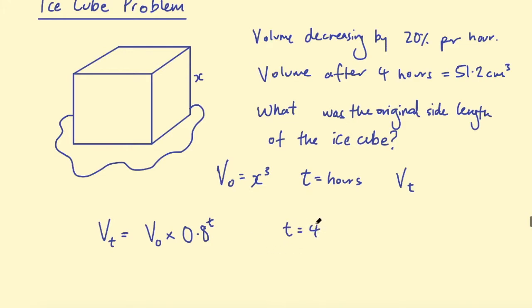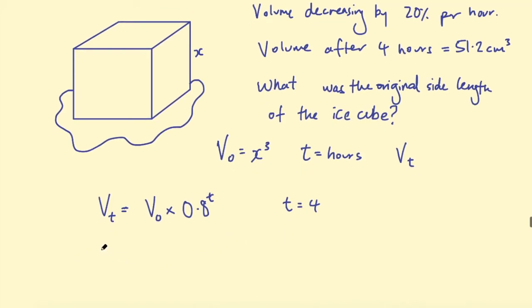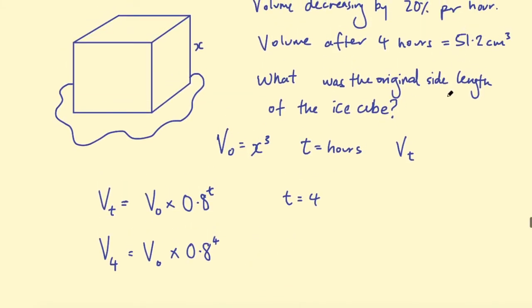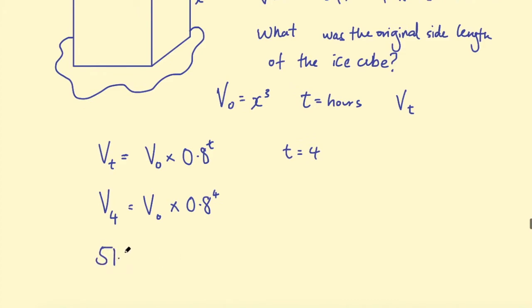So we're looking for the original volume and we're given the volume after four hours. So we can say the volume after 4 hours is the original volume multiplied by 0.8 to the power of 4. And we're told the volume after 4 hours is 51.2, and the original volume is x³.